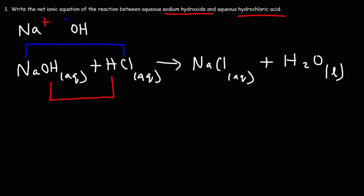So this is the balanced molecular equation. Now, before we can write the net ionic equation, we need to do something first. And that is, we need to write the total ionic equation. And here's how we're going to do that.